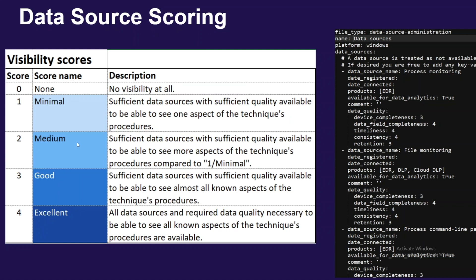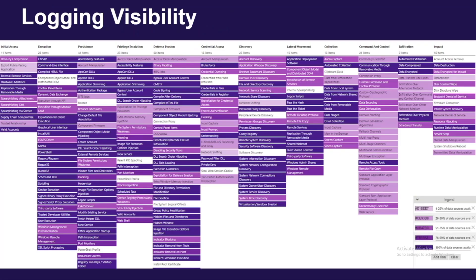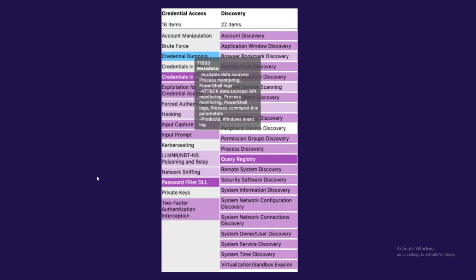Once you finish that YAML file, you pump it into DeTT&CT and it gives you the JSON file to throw into ATT&CK Navigator, and it looks something like this. The legend in the bottom right-hand corner shows you the darker purple is what you're logging somewhat decently, down to white where you're not logging anything at all. Right off the bat I know what I'm logging and where I can build those alerts out. It also gives you a little bit of metadata — the product that can log it, the monitoring type — works out great.